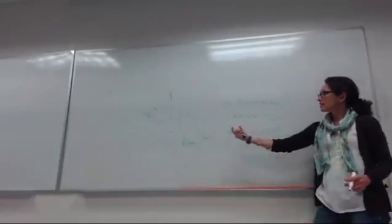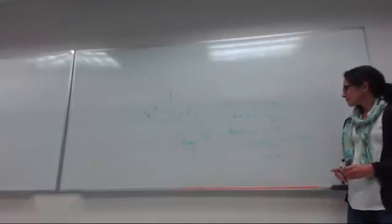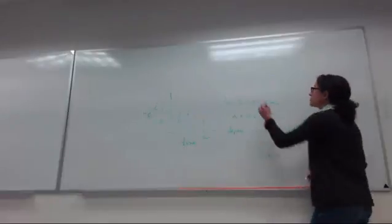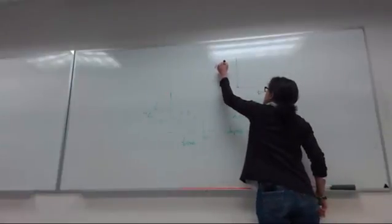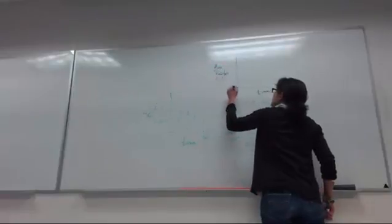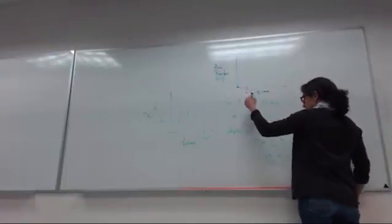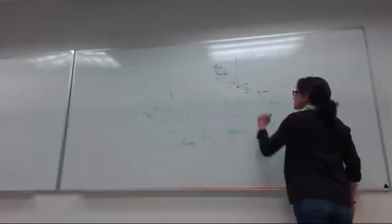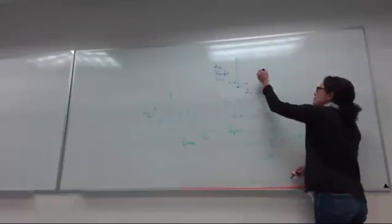And if we wanted to make a cumulative mass curve, we would have time and we would have accumulated rainfall. You start out at zero. At 15 minutes we would be at 0.15 inches, and then we would calculate the depth for each time interval and accumulate that, right?